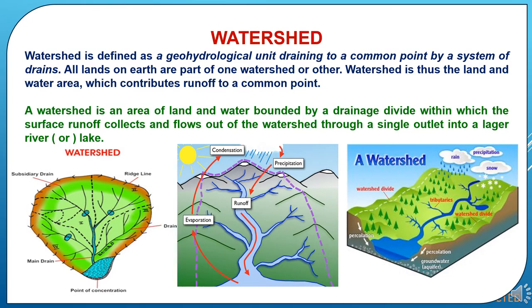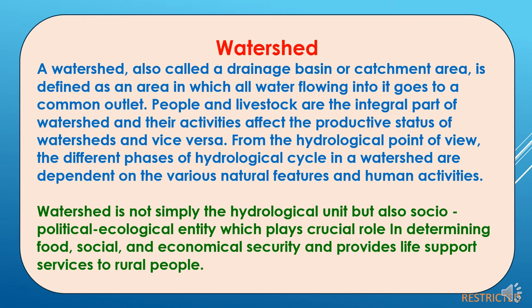What is watershed? Watershed is defined as a geohydrological unit draining to a common point by a system of drains. All lands on earth are part of one watershed or another. A watershed is the land and water area which contributes runoff to a common point — an area bounded by a drainage divide within which the surface runoff collects and flows out through a single outlet into a larger river or lake.